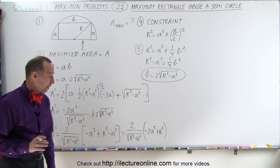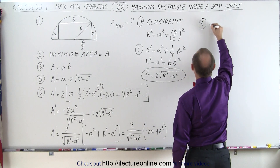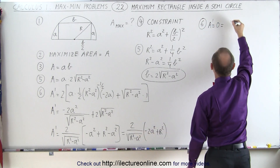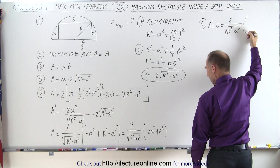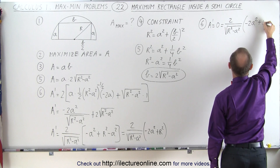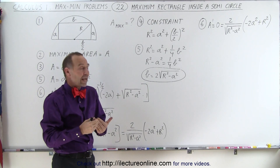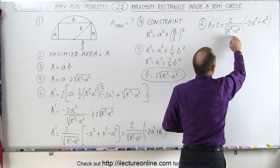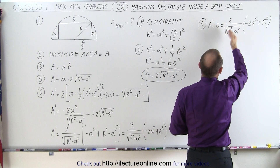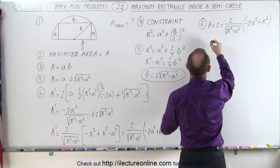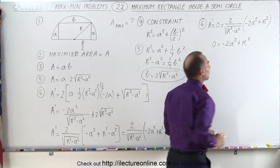Now I'm ready to set that equal to zero. We have A prime equals 0 equals 2 divided by the square root of R squared minus A squared, times the quantity (minus 2A squared plus R squared). Whenever the derivative equals zero and there's a denominator, we can ignore it. We can also divide both sides by the constant 2. Therefore, 0 equals minus 2A squared plus R squared.